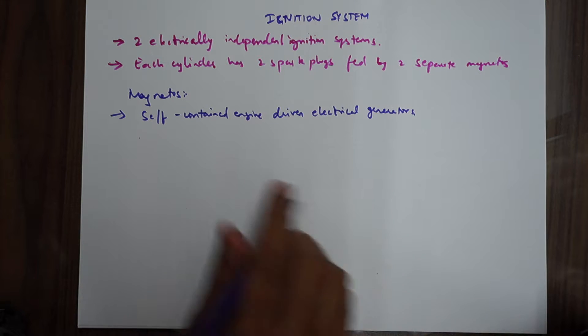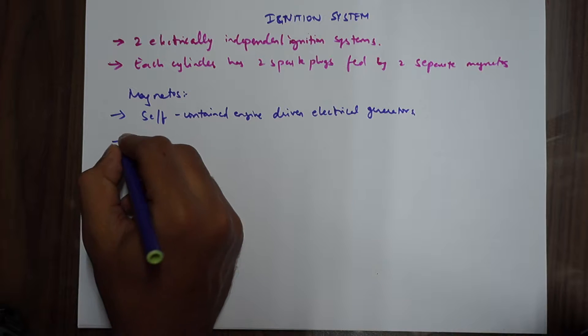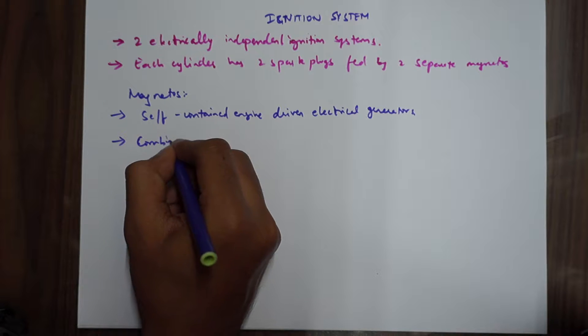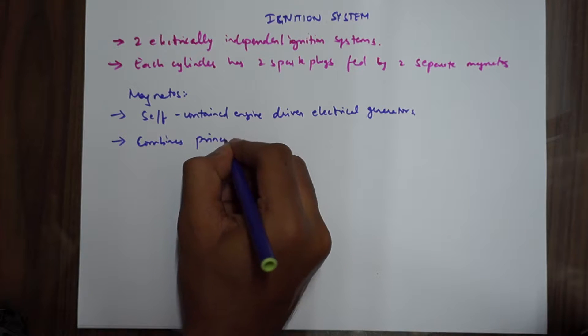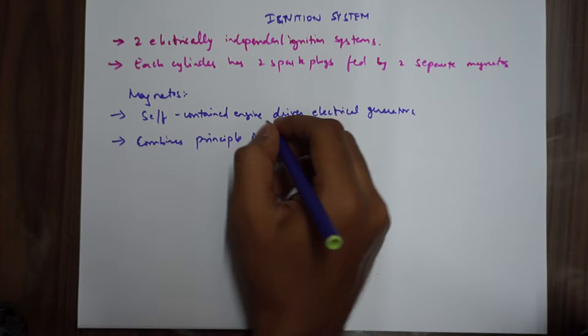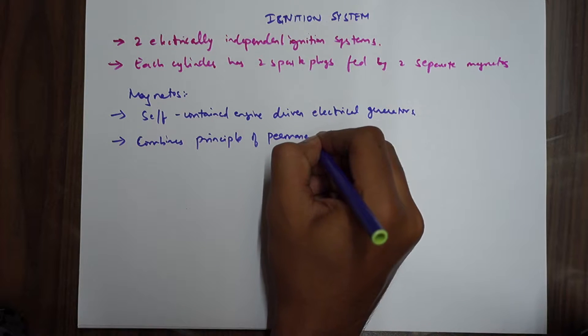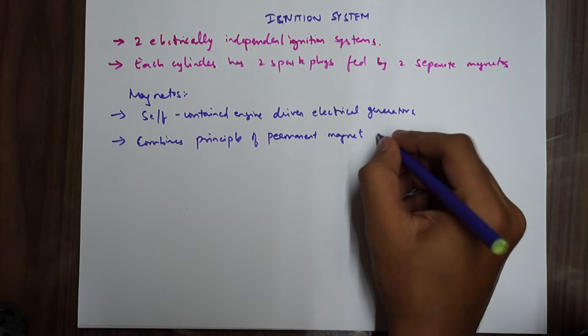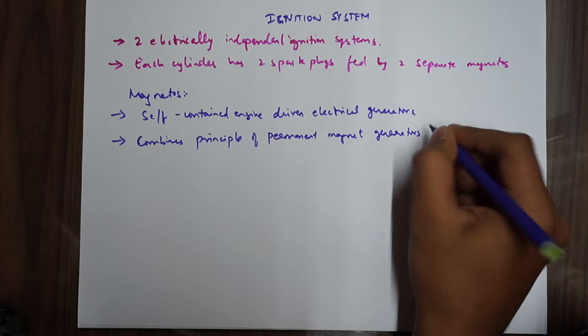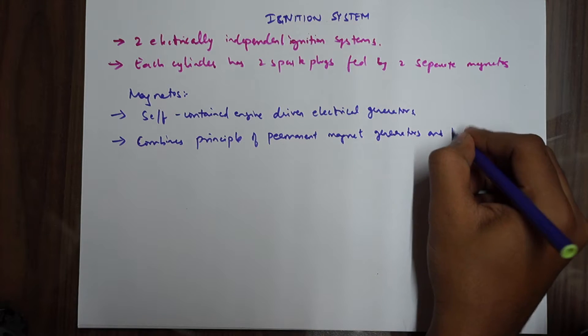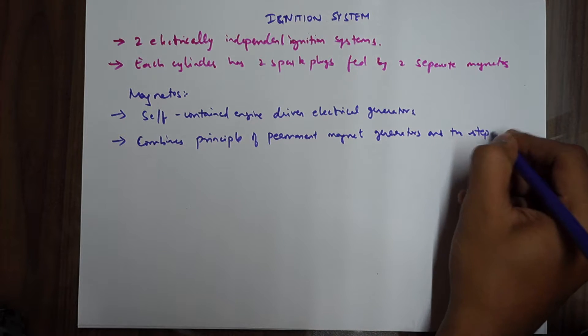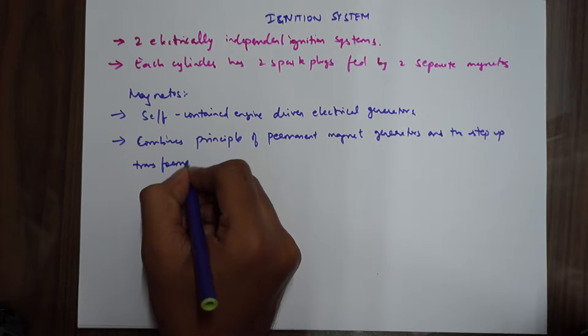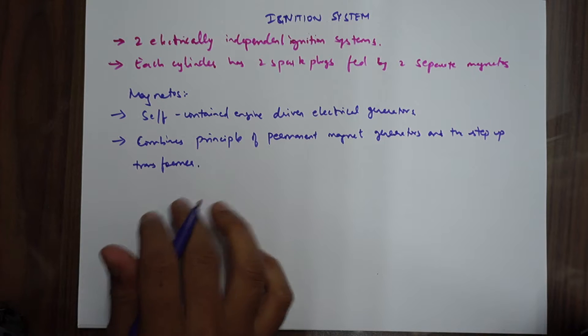What does the magneto do? It combines the principle of permanent magnet generator and the step-up transformer. That's how the magneto, the whole circuit actually works.